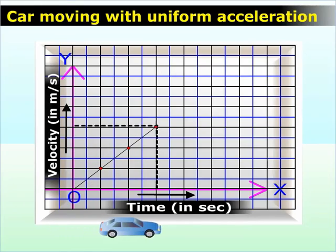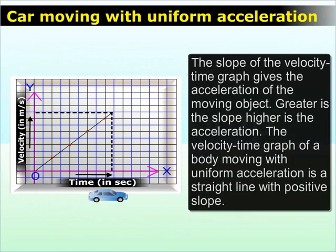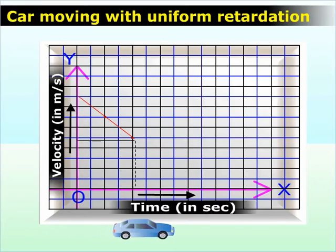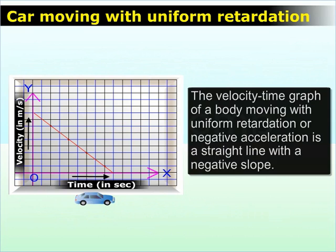A car moving with a uniform acceleration. The slope of a velocity-time graph provides the acceleration of an object. The greater the slope, the higher the acceleration. The velocity-time graph of an object moving with a uniform acceleration is a straight line with a positive slope. The velocity-time graph of an object moving with a uniform retardation or negative acceleration is a straight line with a negative slope.